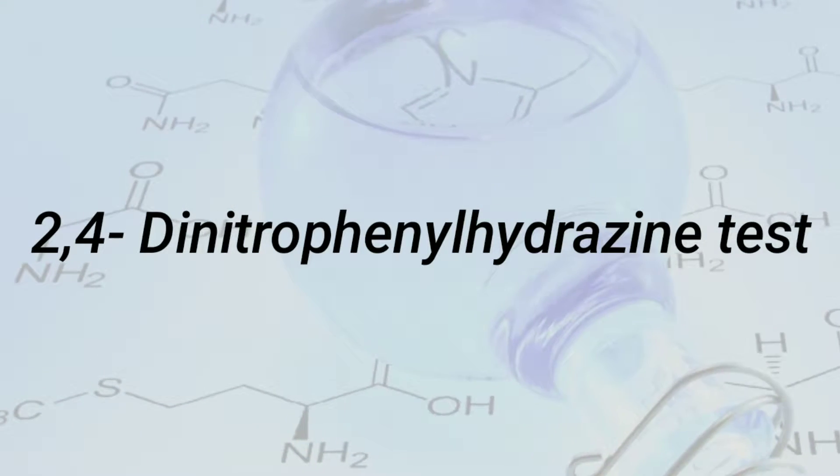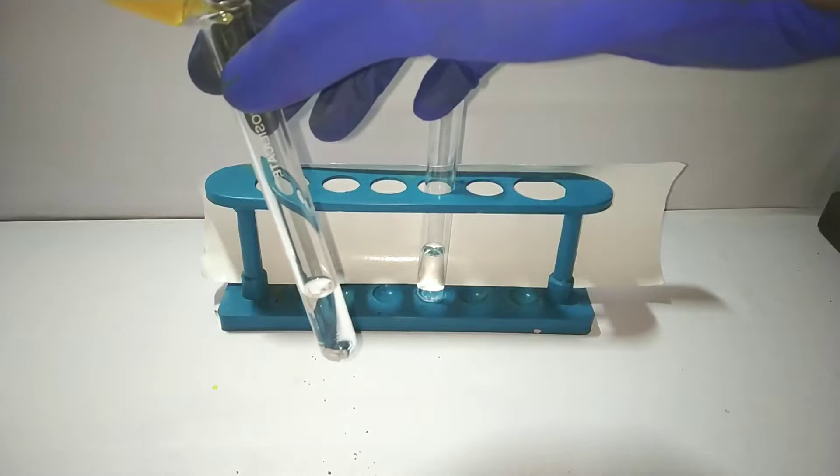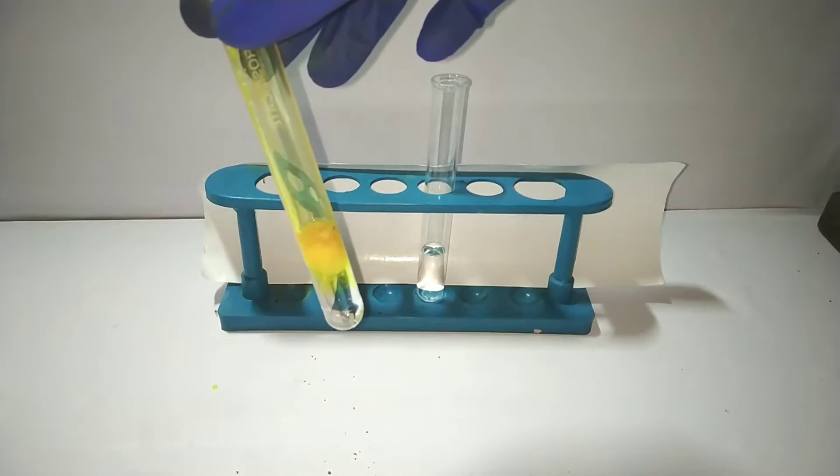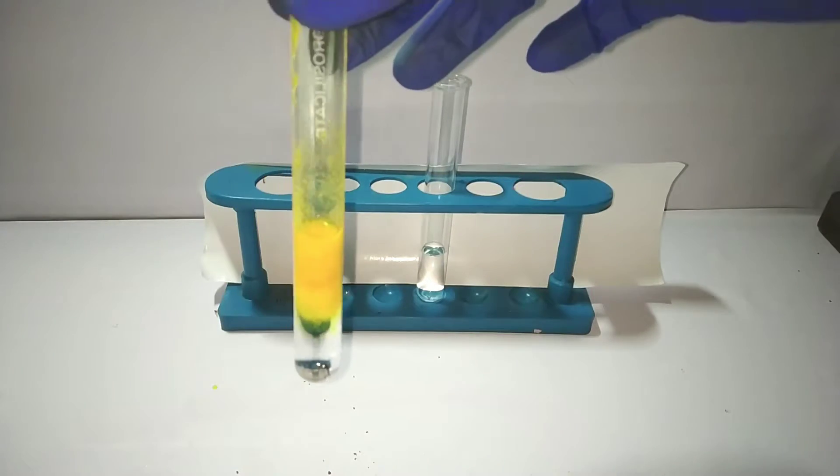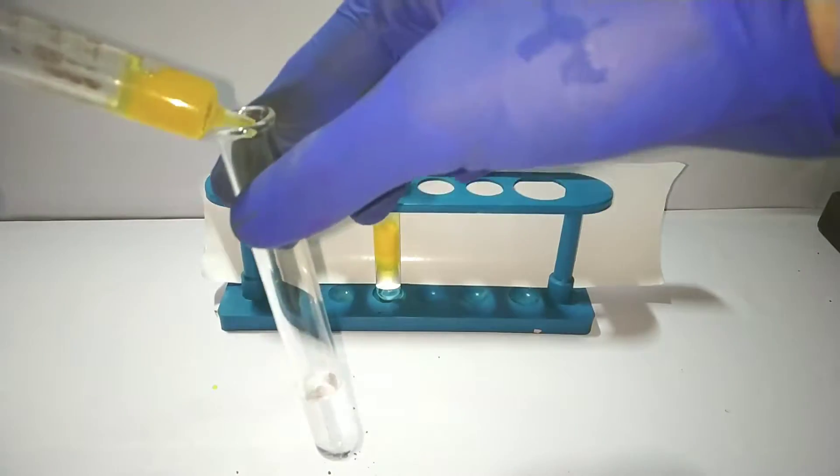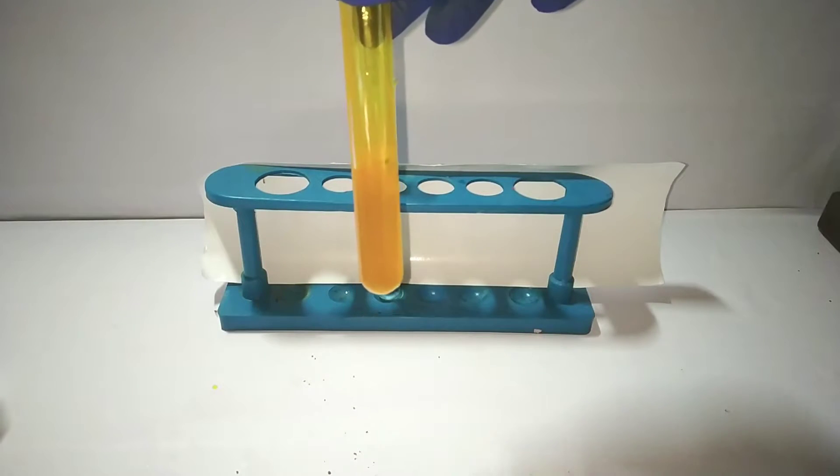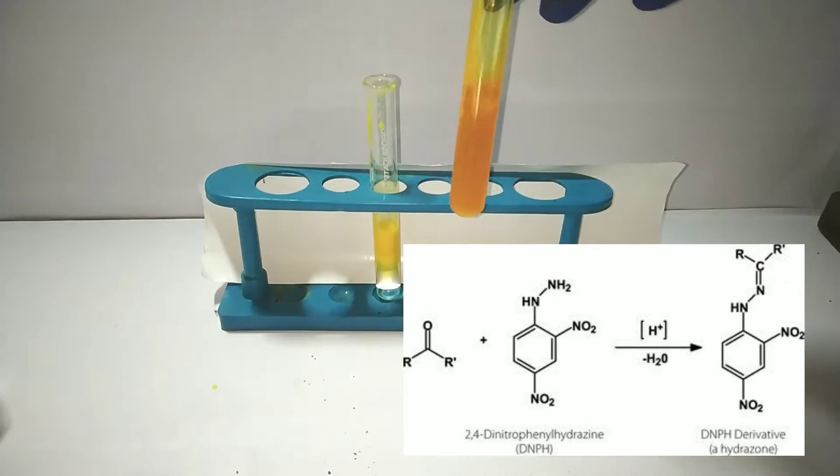Let us begin with the 2,4-dinitrophenylhydrazine test. This is a general test given by both aldehydes and ketones. Here I have an aldehyde and a ketone sample in two test tubes. Into the sample I add about 1 to 2 milliliters of 2,4-dinitrophenylhydrazine reagent solution. Immediately on adding the reagent you see a yellow colored precipitate that has formed. You have a similar result when you add the reagent to the ketone solution. In the second reaction we got an orange colored precipitate.